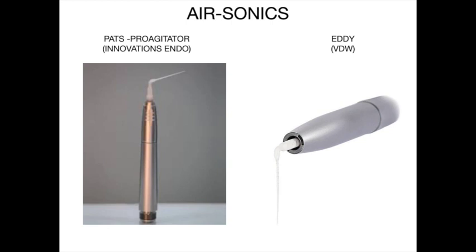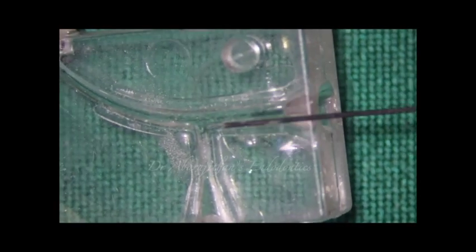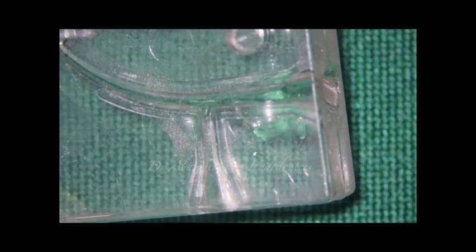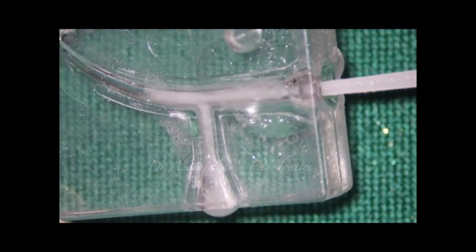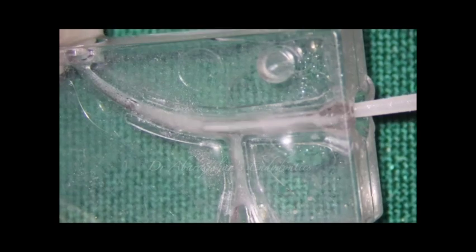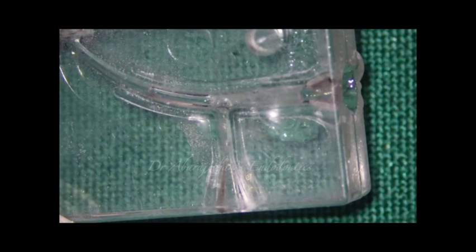Then we have airsonics. The classic example is Eddie from VDW, and in India we have PADS or the Pro Agitator. These are modified air scalars and they have polymer tips, which is the best part about sonics like the Endo Activator and also airsonics. Since airsonics have frequency and amplitude in between sonics and ultrasonics, they seem to be more effective for both lateral displacement of the irrigant and also acoustic streaming and microbubble explosion — that is the cavitation effect.